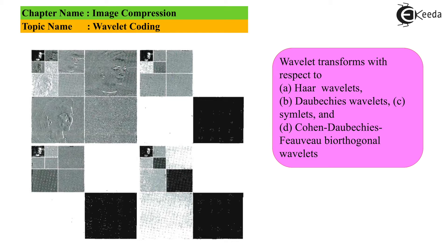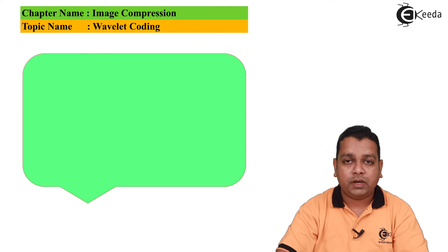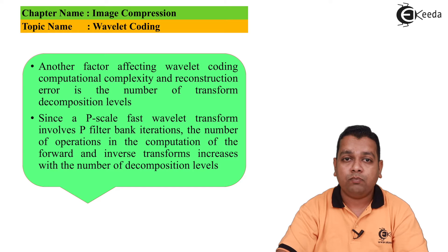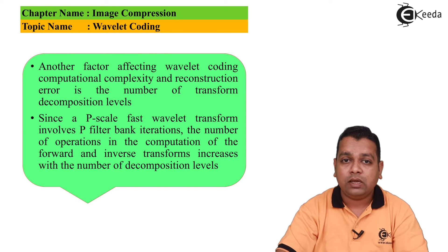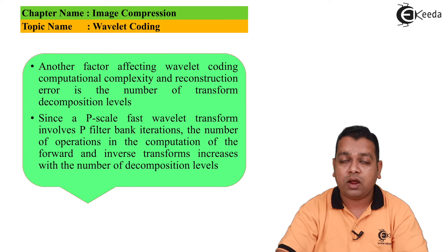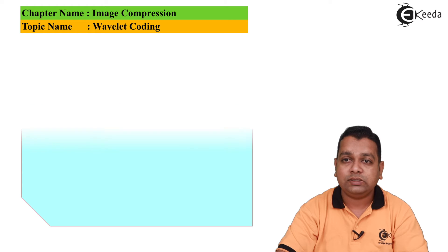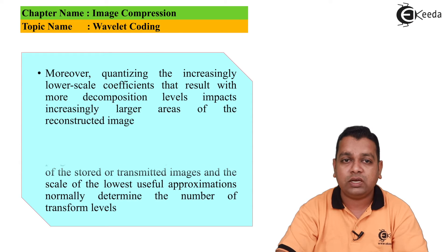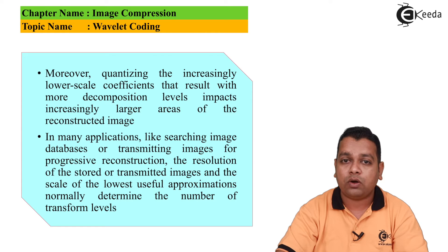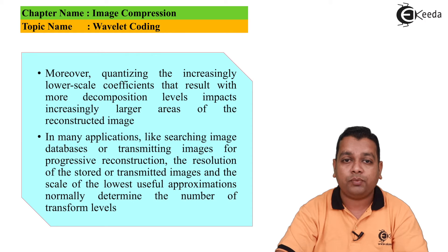Another factor affecting Wavelet coding computational complexity and reconstruction error is the number of transform decomposition levels, which is the topic of decomposition level selection. Since a p-scale fast Wavelet transform involves p filter bank iterations, the number of operations in computing the forward and inverse transform increases with the number of decomposition levels. Moreover, quantizing the increasingly lower-scale coefficients that result from more decomposition levels impacts increasingly larger areas of the reconstructed image. In many applications such as searching image databases or transmitting images for progressive reconstruction, the resolution of stored or transmitted images and the scale of the lower useful approximations normally determine the number of transformation levels.